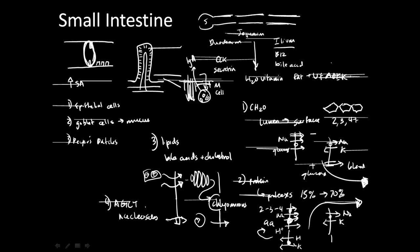So in summary, the small intestine is part of the alimentary tract, in which digestion, absorption, and secretion occurs.